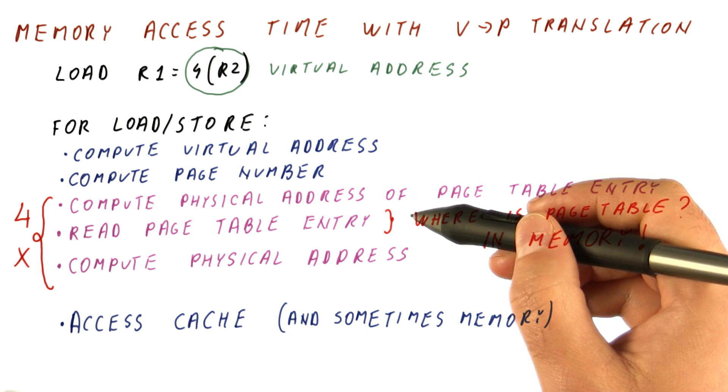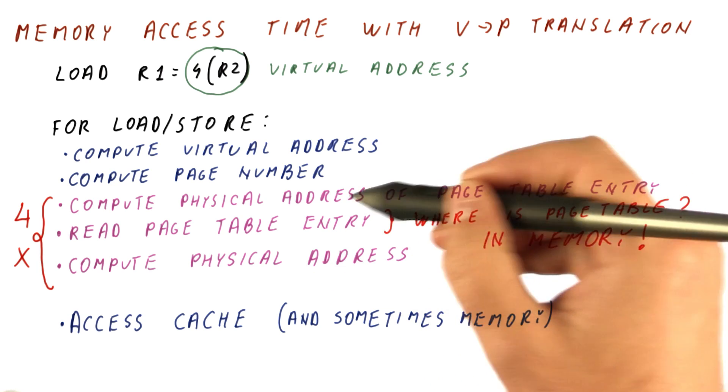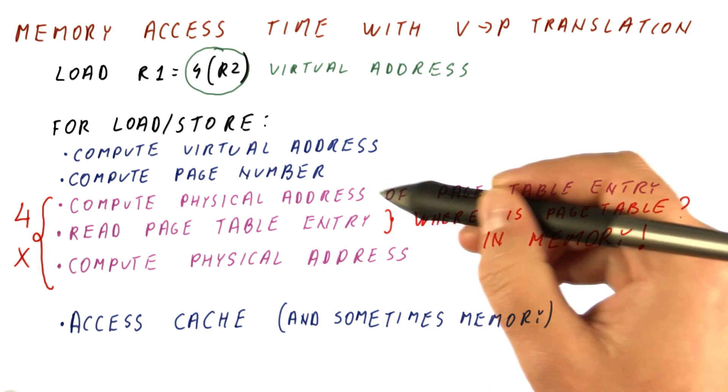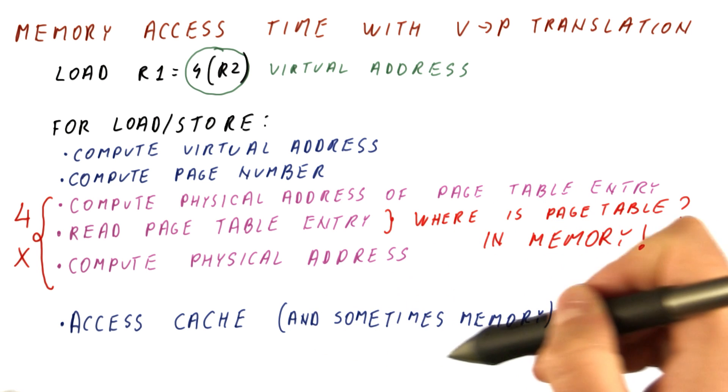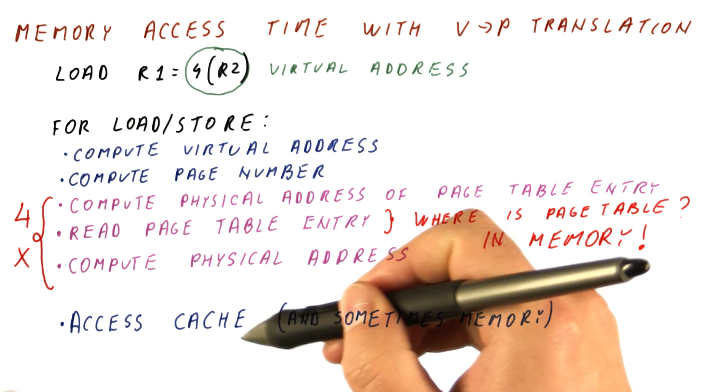So somehow, we have a situation where the virtual to physical address translation is costing us more than the memory accesses that we try to avoid by having the caches.